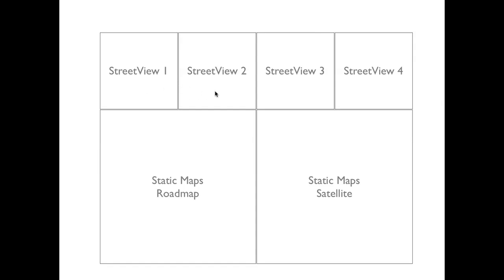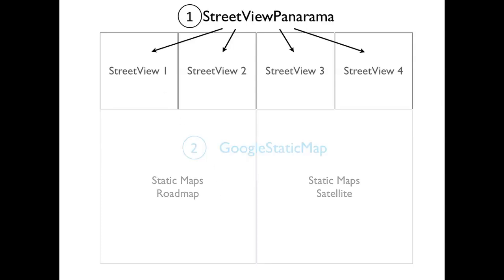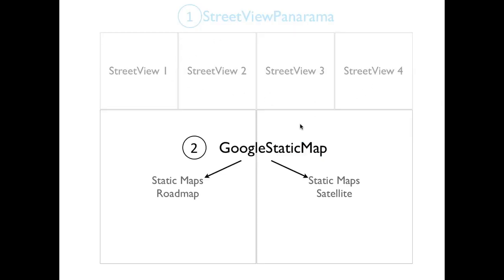It works off these six images — there are four street view images and two static maps images. What the code does is basically call the street view panorama subroutine to update the first four street view images, and then it calls the Google static map subroutine twice: first to update the road map on the left, and then to update the satellite on the right.